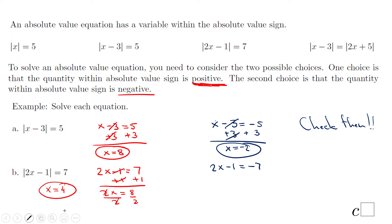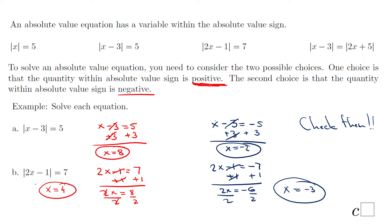For the second equation, we add 1 on both sides and we have 2x equals negative 6. Divide by 2, and we end up with x equals negative 3. Let's check: 2 times negative 3 is negative 6, minus 1 is negative 7, absolute value of negative 7 is 7. So both solutions work.